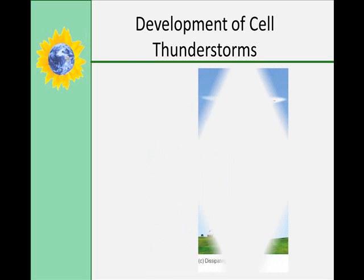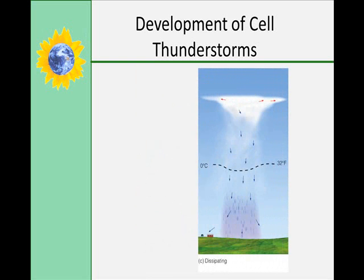Finally, you have the dissipating stage. The updraft begins to weaken, the gust fronts move away, precipitation lightens up, and the downdrafts dominate. Basically you start cutting off the fuel supply for the storm, so it just starts to peter out and die. Remember, cell thunderstorms usually take place in less than an hour, so all of this happens in under an hour.